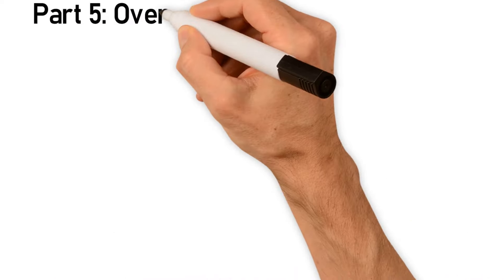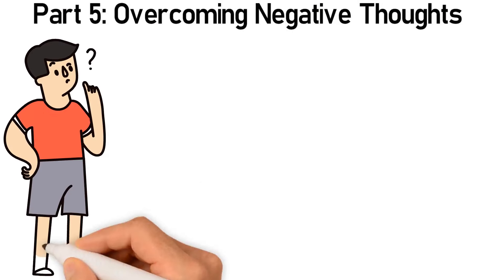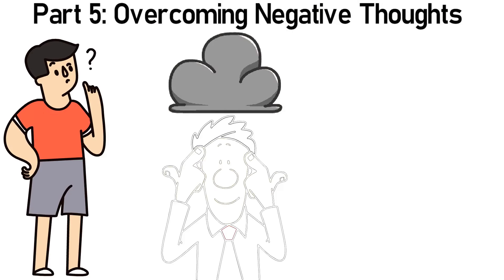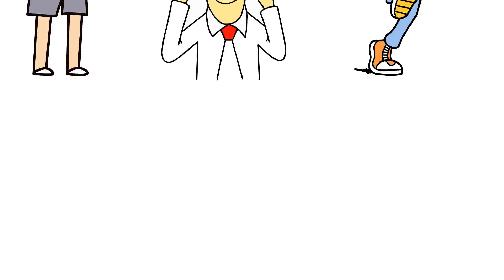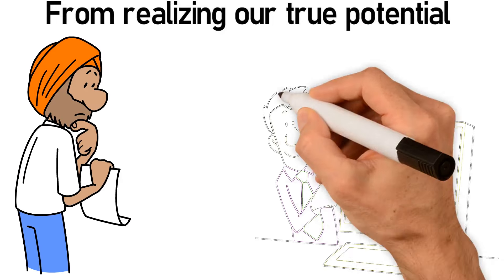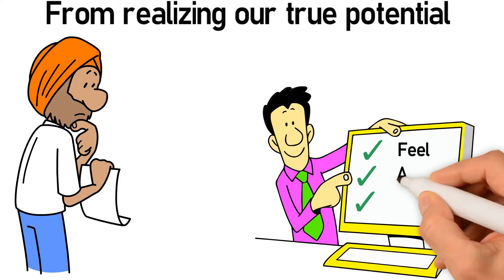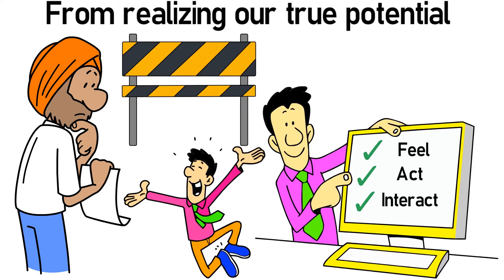Part five: overcoming negative thoughts. Negative thoughts are like dark clouds that can overshadow our minds. They can create self-doubt, fear, and prevent us from realizing our true potential. These thoughts can sneak into our daily lives, affecting how we feel, act, and interact with others. They can be a barrier to our happiness and success.